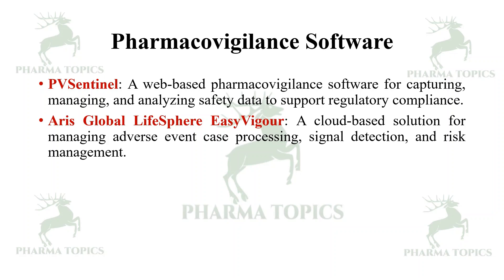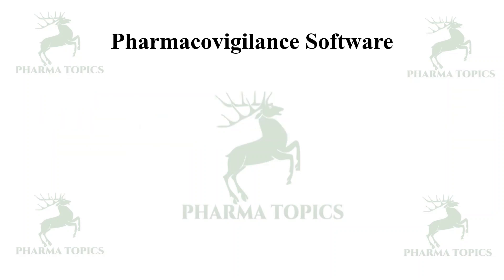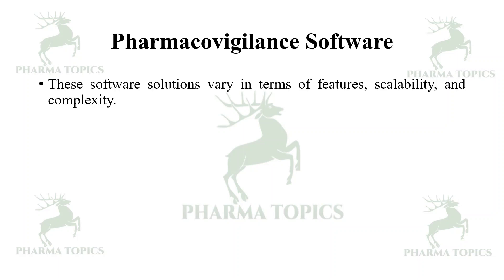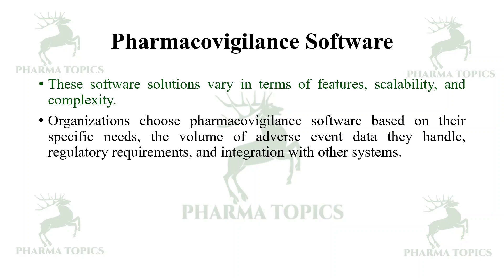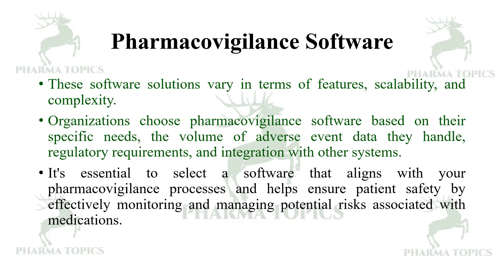These software solutions vary in terms of features, scalability, and complexity. Organizations choose pharmacovigilance safety software based on their specific needs, the volume of adverse event data they handle, the regulatory requirements, and the integration with other systems. It's essential to select software that aligns with the pharmacovigilance process and helps ensure patient safety by effectively monitoring and managing potential risks associated with medications.